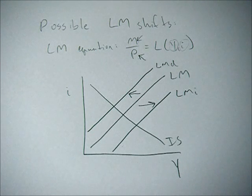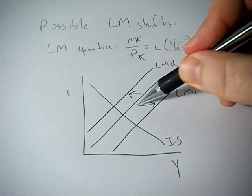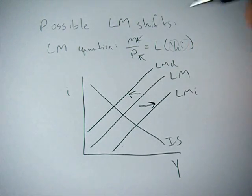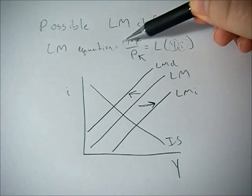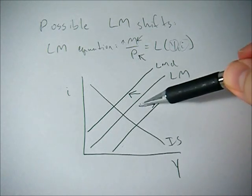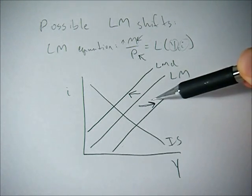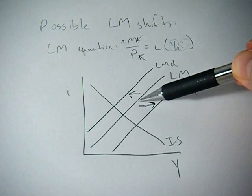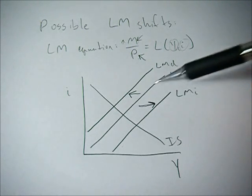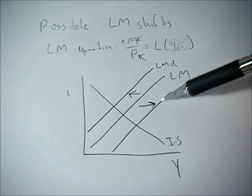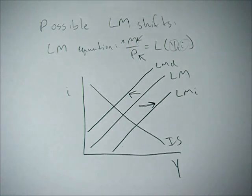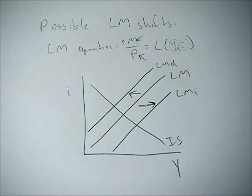So if the central bank or the Federal Reserve decides to increase the money supply by buying T-bills, that's going to shift the LM curve to the right. And it's saying that at any given interest rate, we're going to have to have a higher level of GDP in order to keep the money market in equilibrium.